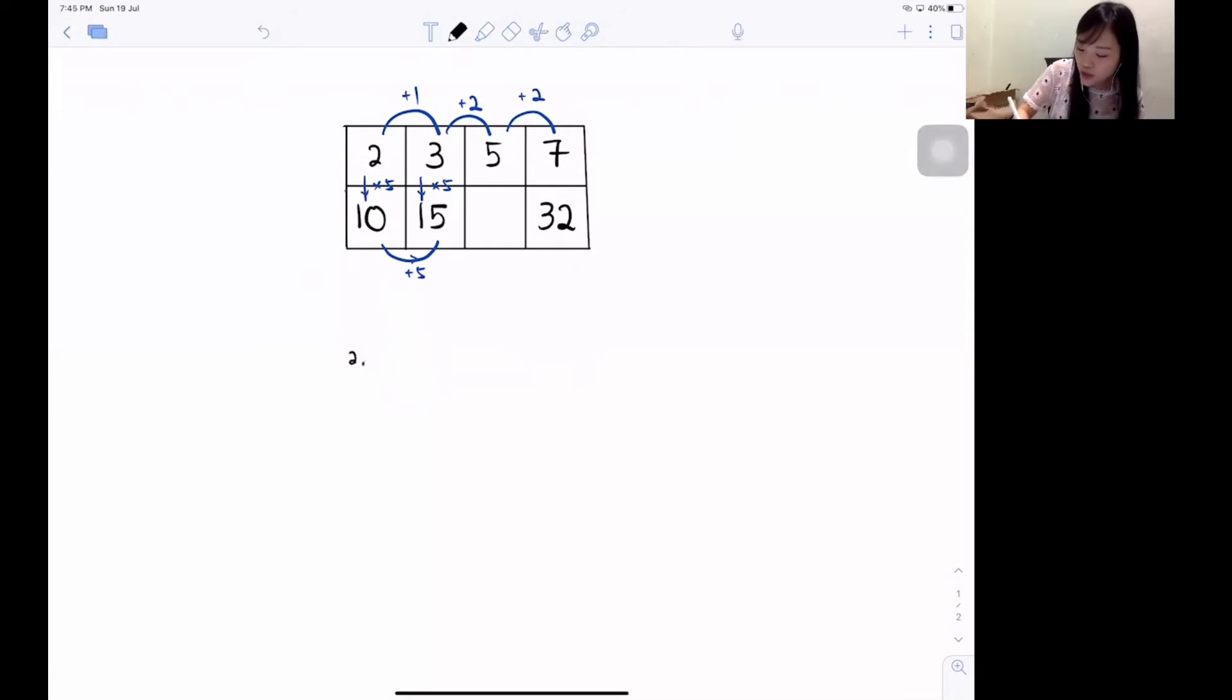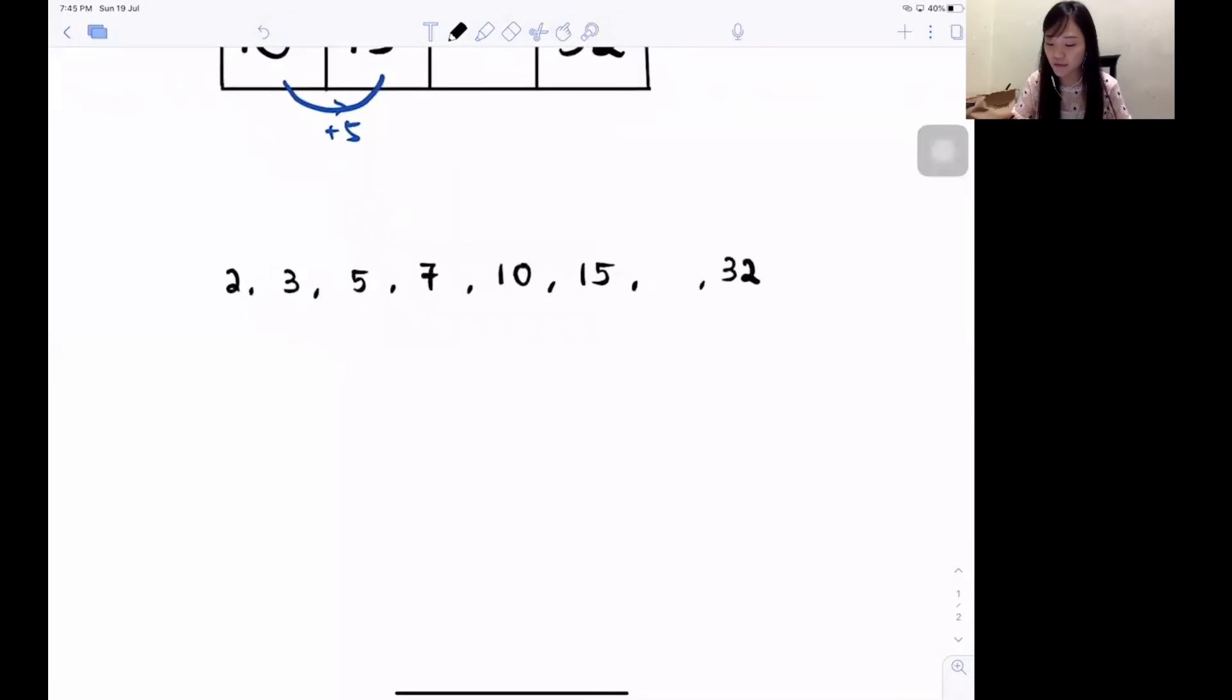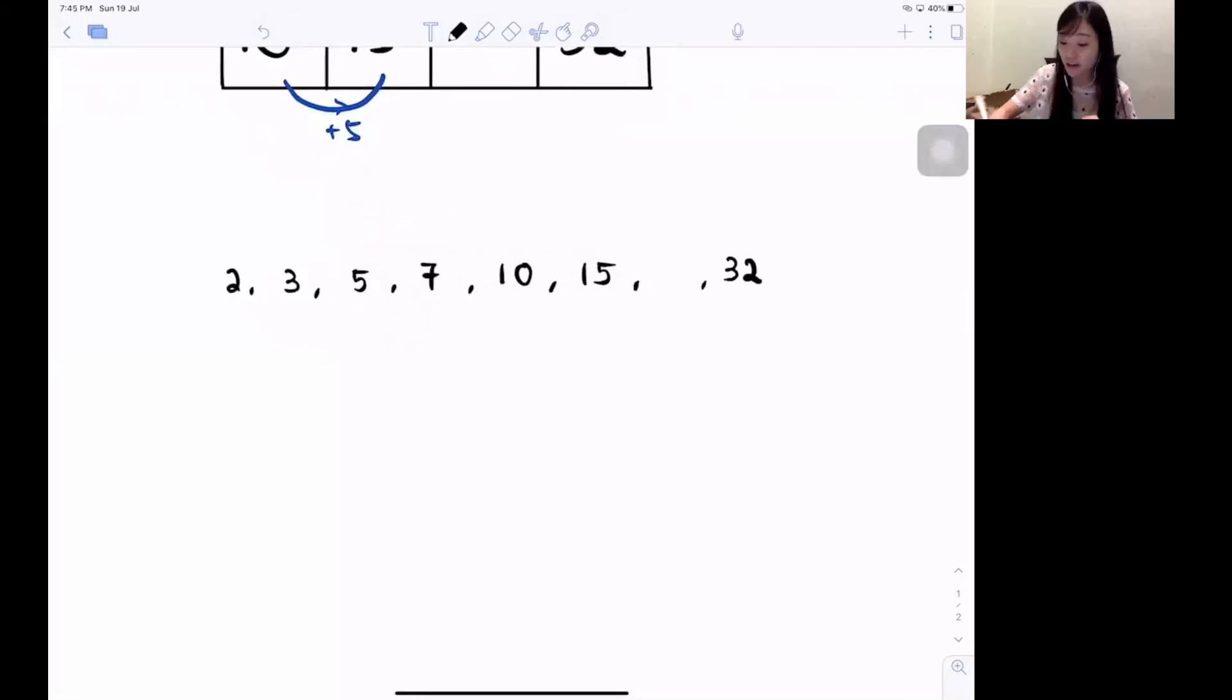This whole thing, you can write it down again: 2, 3, 5, 7, 10, 15, don't know, 32. If I write out one by one, this is how it looks like. So if this is how it looks like for now, then how do I do it? I already think out of the box, then again you'll think about that relation, right?